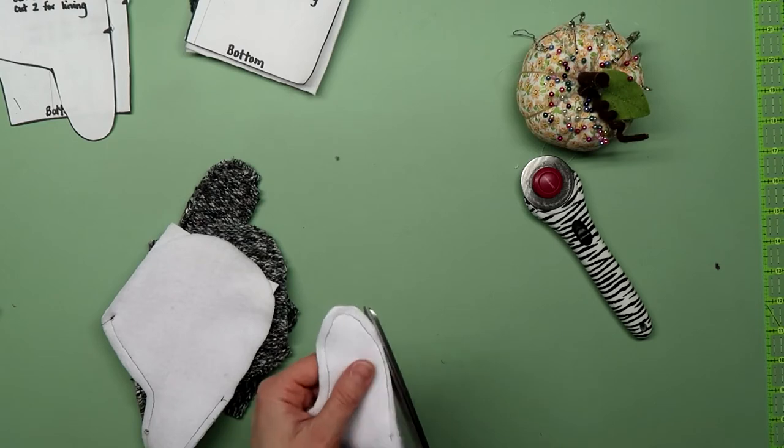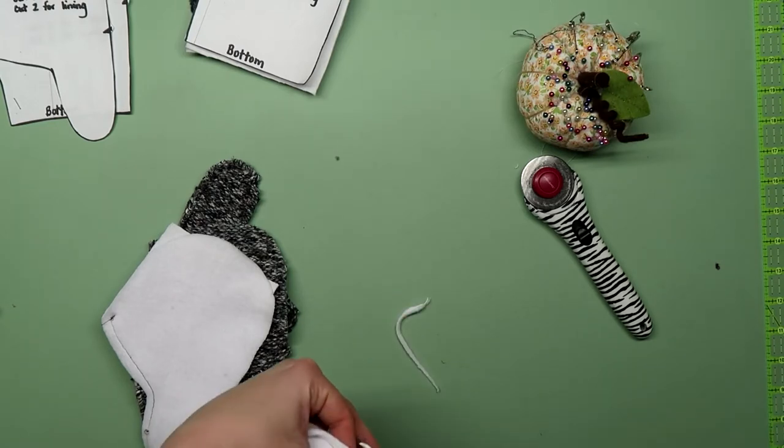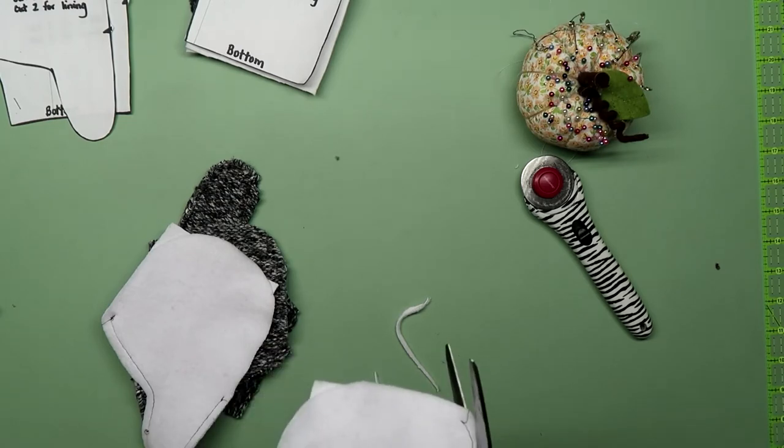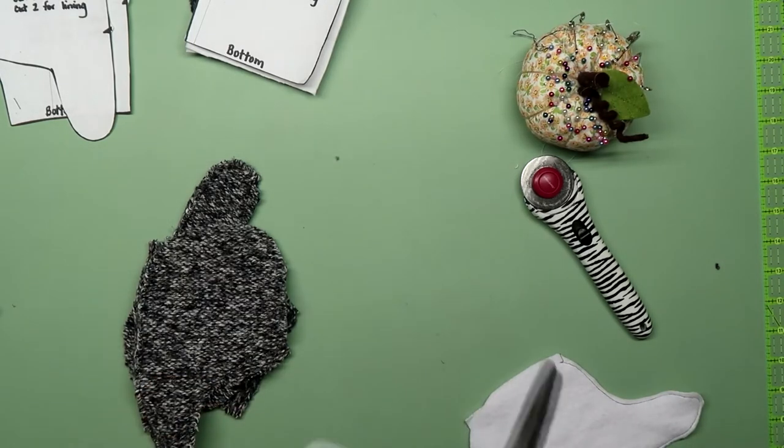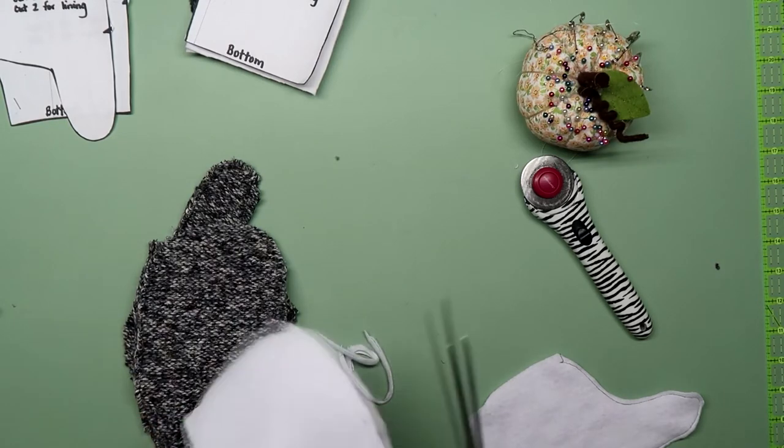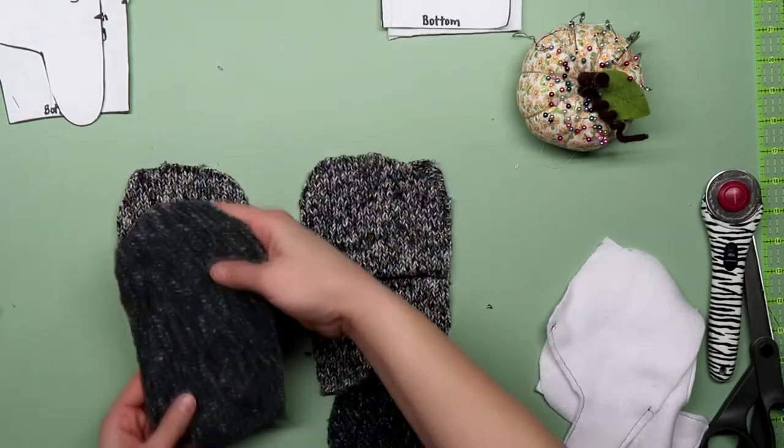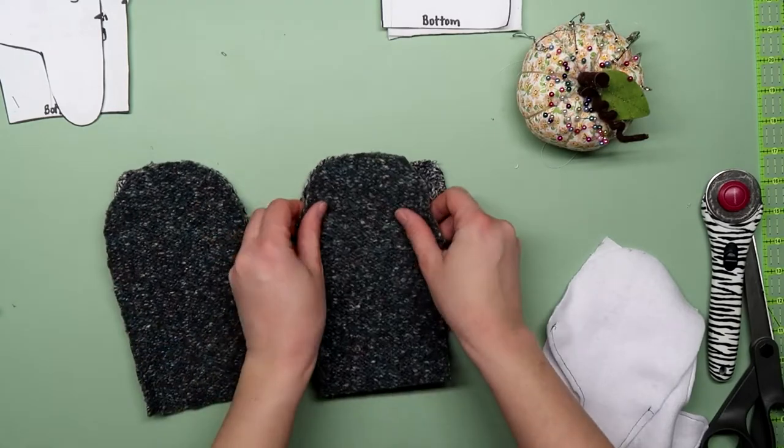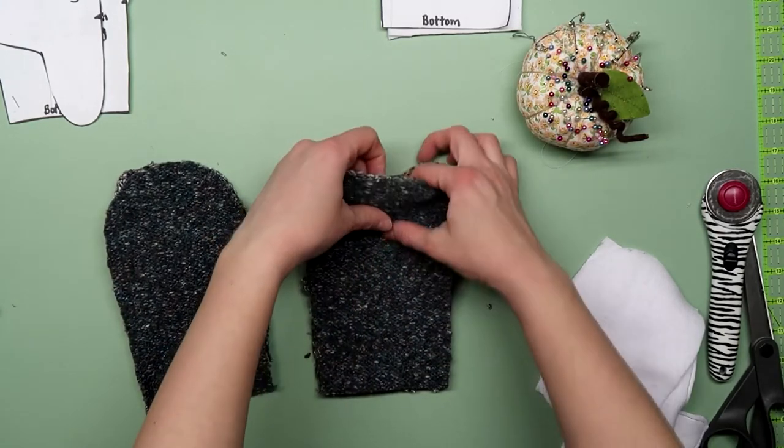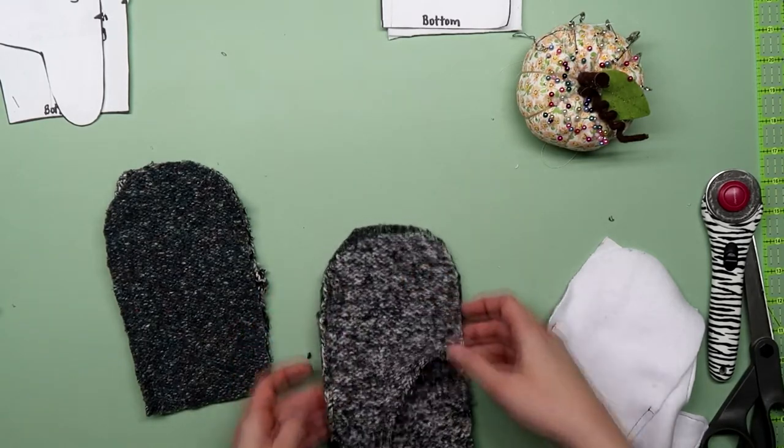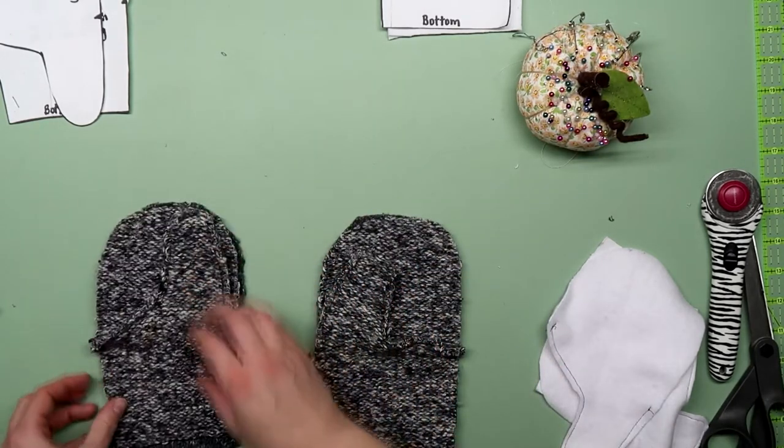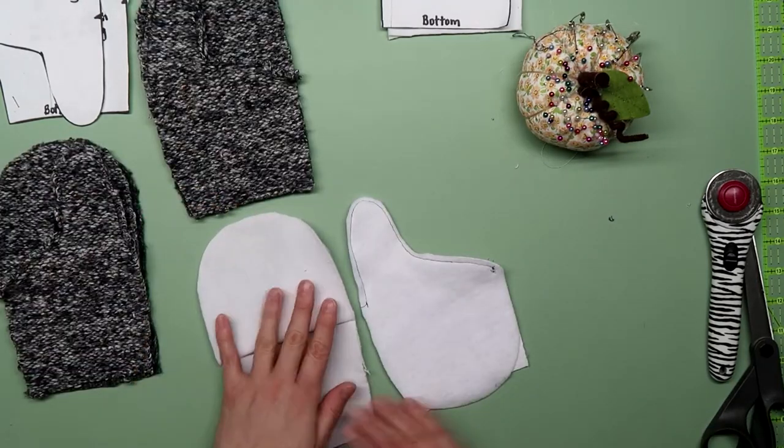Trim down the seams to an eighth inch. Be careful not to cut into the stitches. Open up the flap where the fingers will go and lay piece three right side together. You can see the thumb piece will be on the outside of this. Do this for the lining as well.